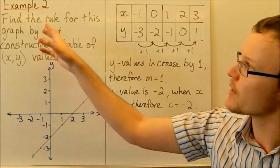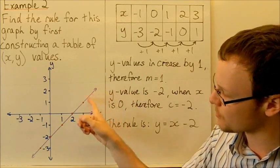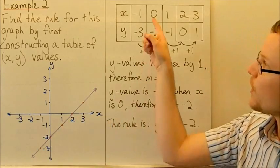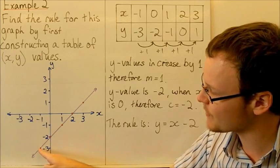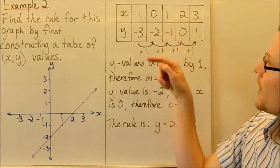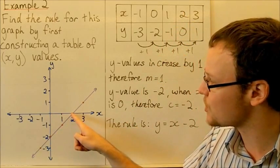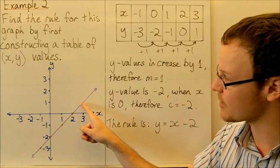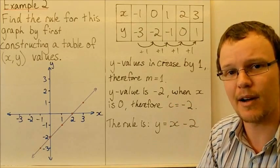Our last example: we'll find the rule from a given graph by first constructing a table of values. I've chosen 5 points on the graph where x increases by 1 each time: (negative 1, negative 3), (0, negative 2), (1, negative 1), (2, 0), (3, 1). It's important that the x values increase by 1 so we can find m correctly.